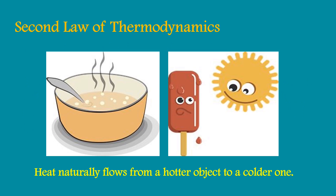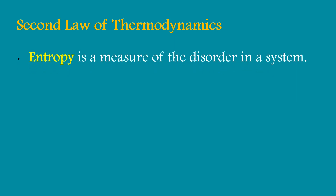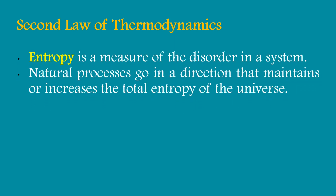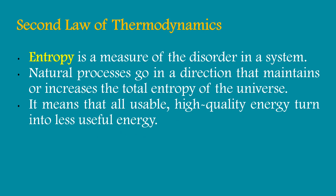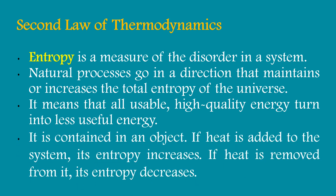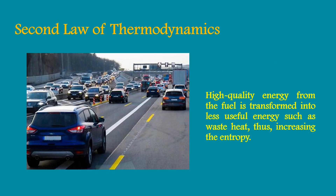Heat naturally flows from a hotter object to a colder one. Entropy is a measure of disorder in a system. Natural processes go in a direction that maintains or increases the total entropy of the universe, meaning all usable, high-quality energy turns into less useful energy. If heat is added to the system, its entropy increases; if heat is removed from it, its entropy decreases. High-quality energy from fuel is transformed into less useful energy such as waste heat, thus increasing the entropy.